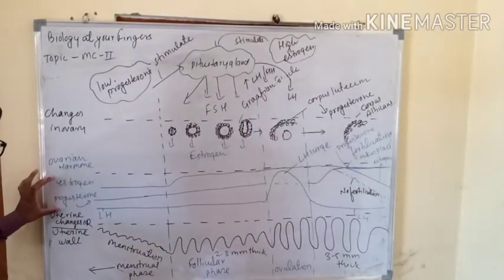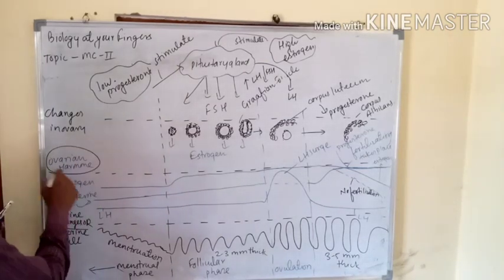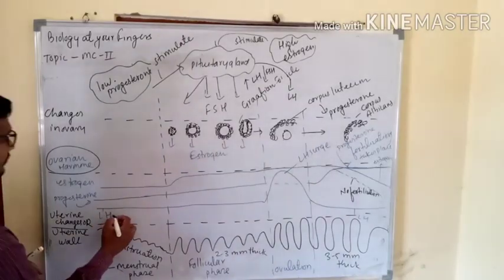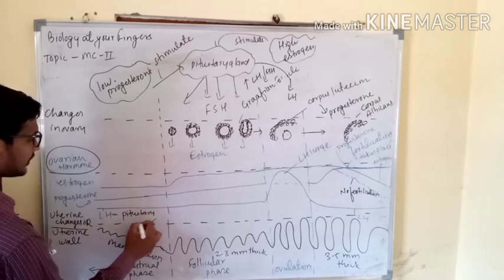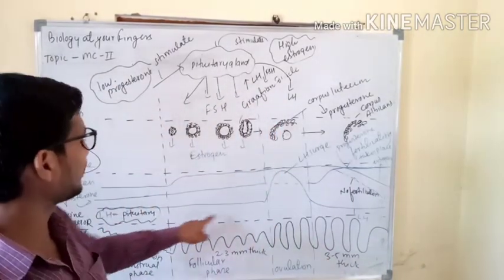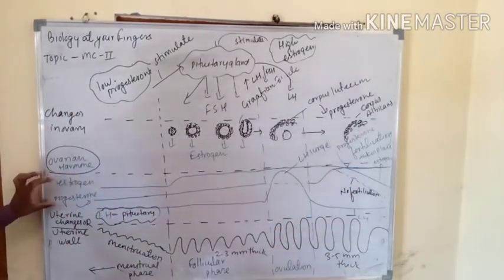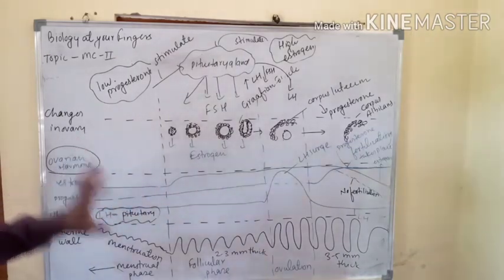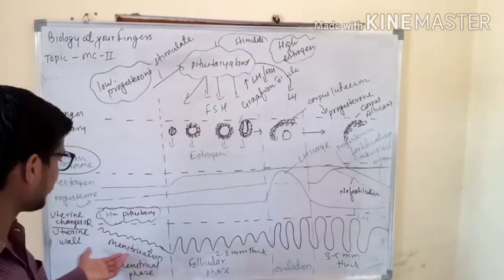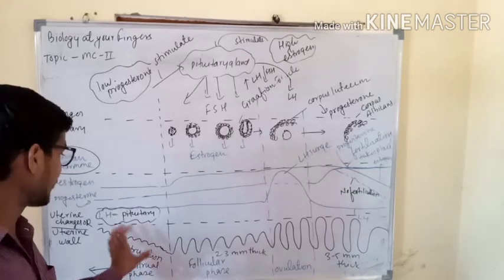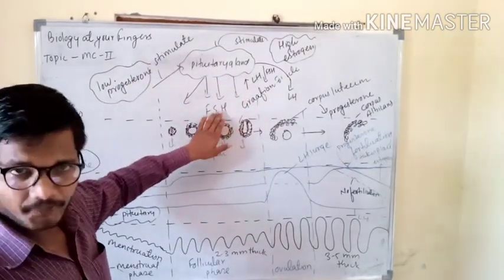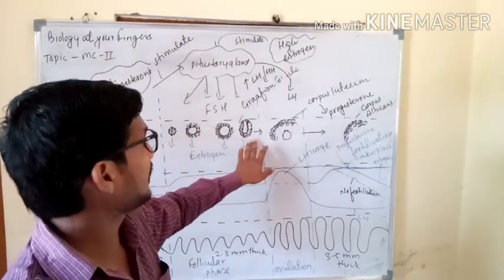These are the changes in the uterine wall. These are the certain kinds of ovarian hormones. LH is released by the pituitary gland — not by the ovaries — so you have to remember that LH is released by the pituitary. When the level of estrogen and progesterone is very low, the lining of the uterus breaks and comes out as blood and mucus — this is menses, or menstruation — the menstrual phase. This low level of progesterone and estrogen acts as a stimulus for the pituitary gland, and now the pituitary gland will release FSH.